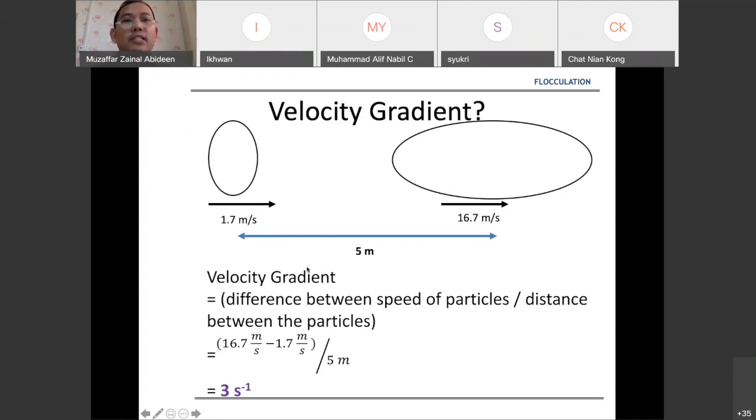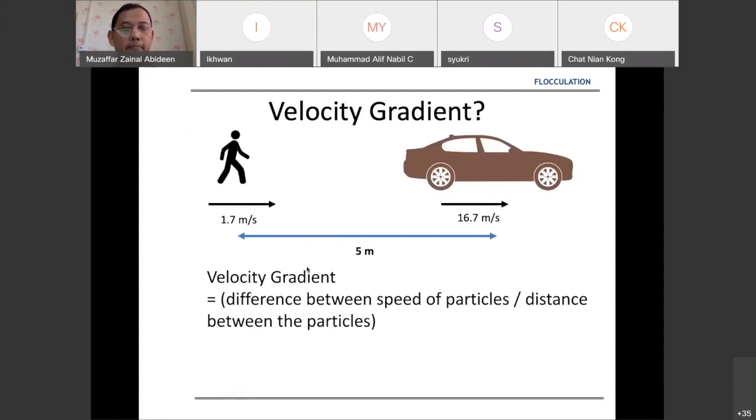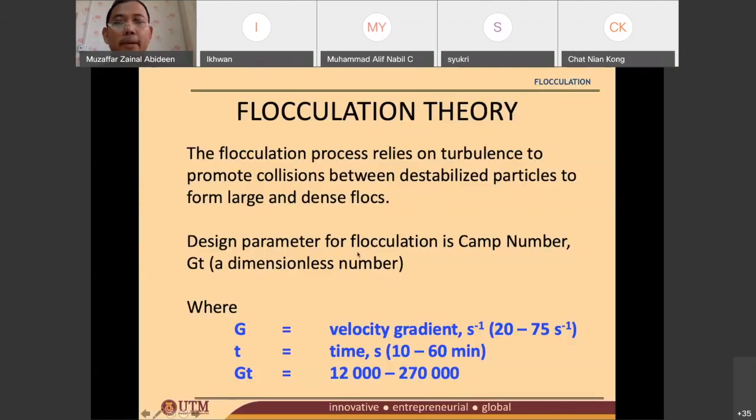In order for us to have a successful flocculation process, we need to obtain our Camp number or Gt to be between 12,000 to 270,000. This is a recommended value for the Gt or for the Camp number.